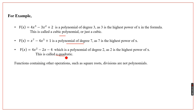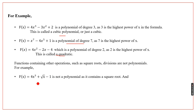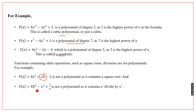Functions containing square roots or divisions are not polynomials because their domain is not all real numbers. For example, f(x) = 4x³ + √x − 1 is not a polynomial function because it contains a square root. Similarly, f(x) = 4x⁵ − x² + 3/x is not a polynomial function because it contains a division by x.